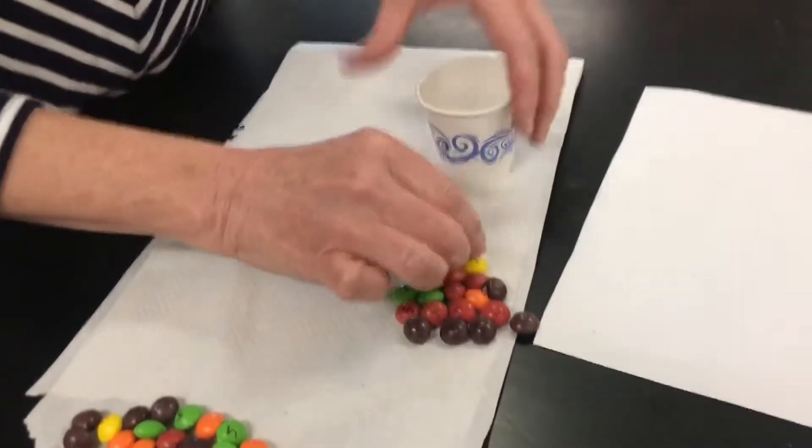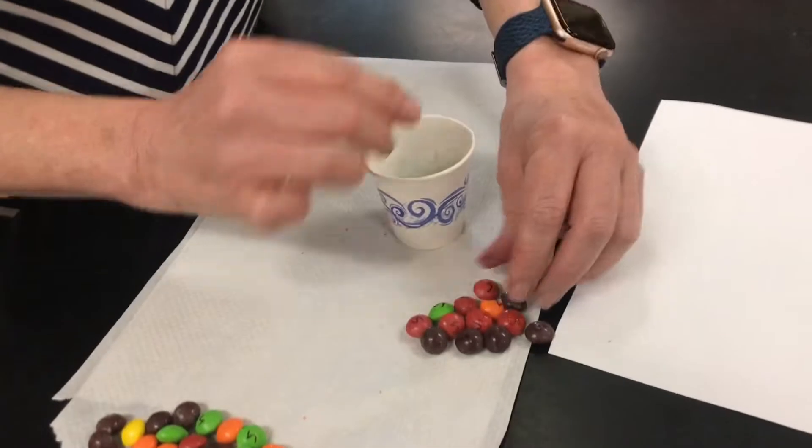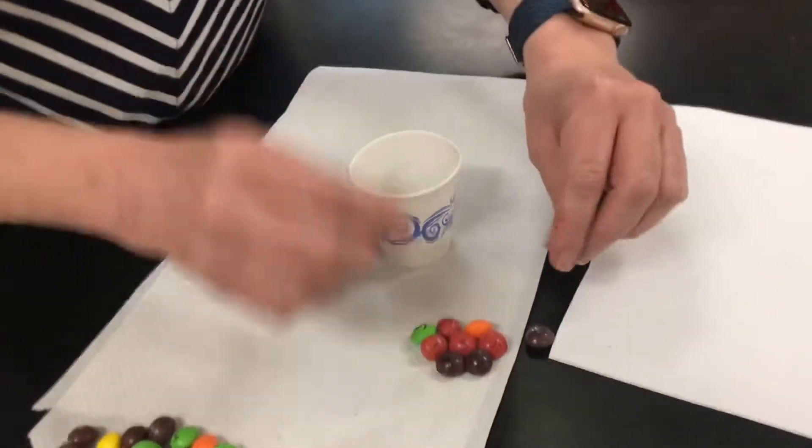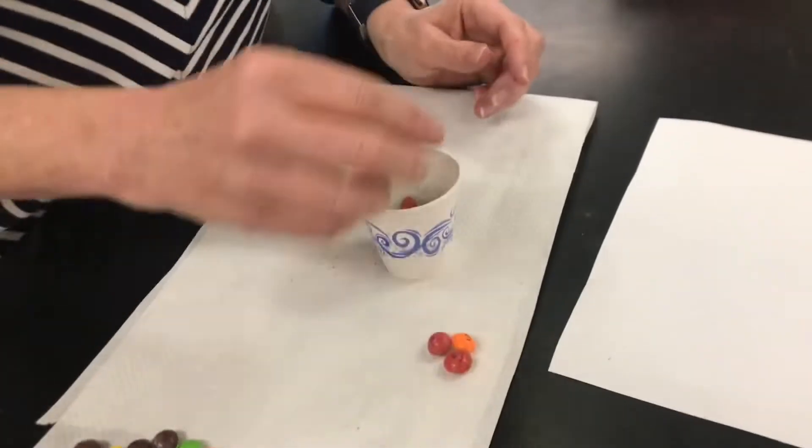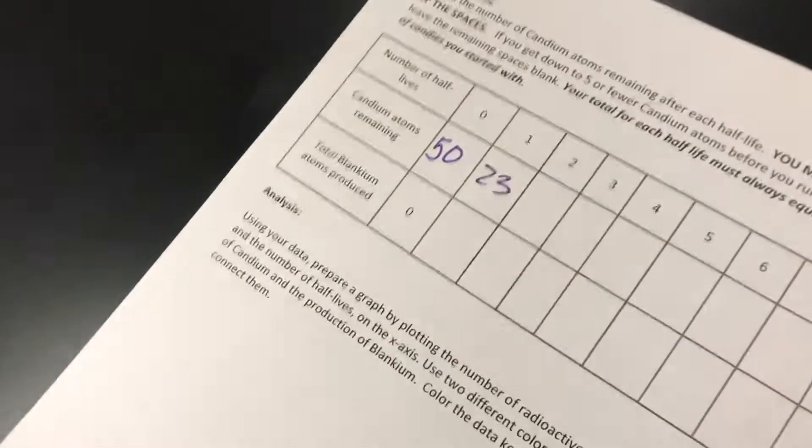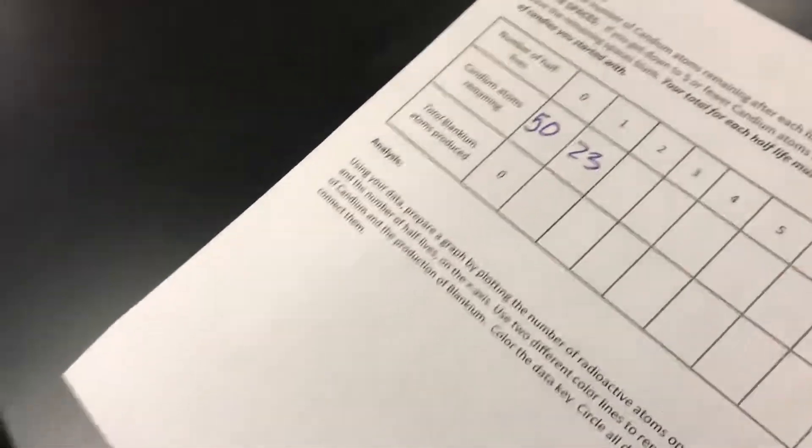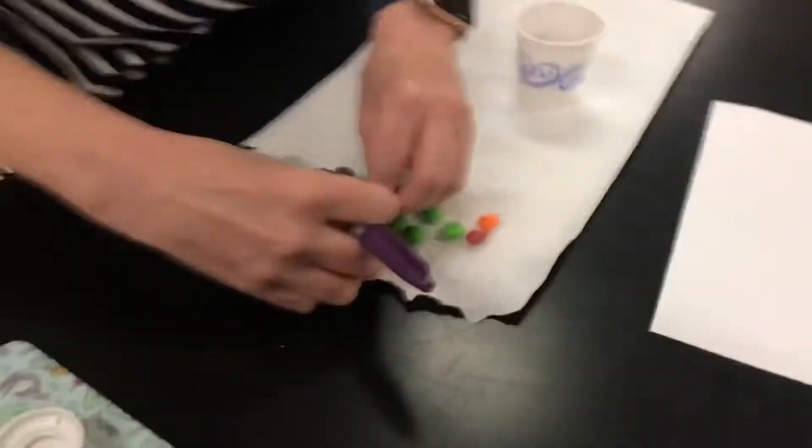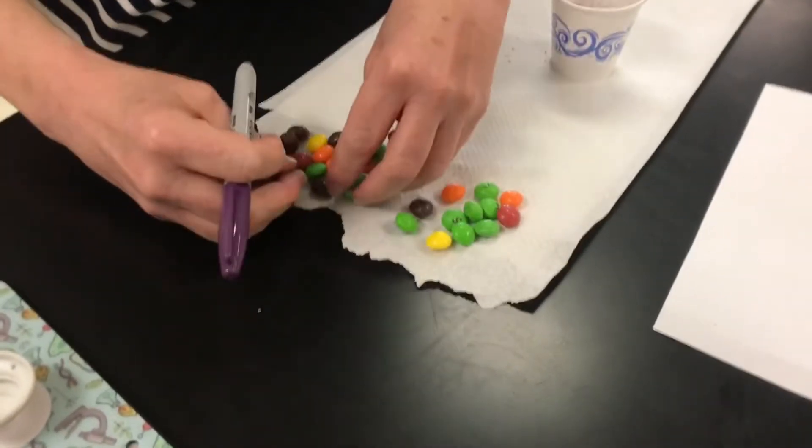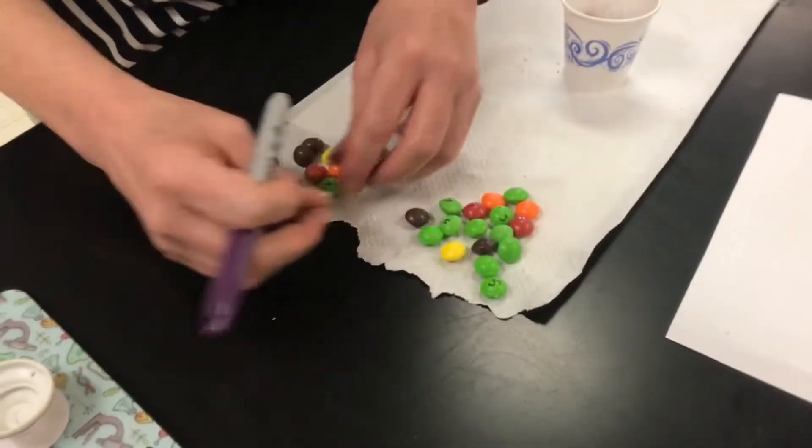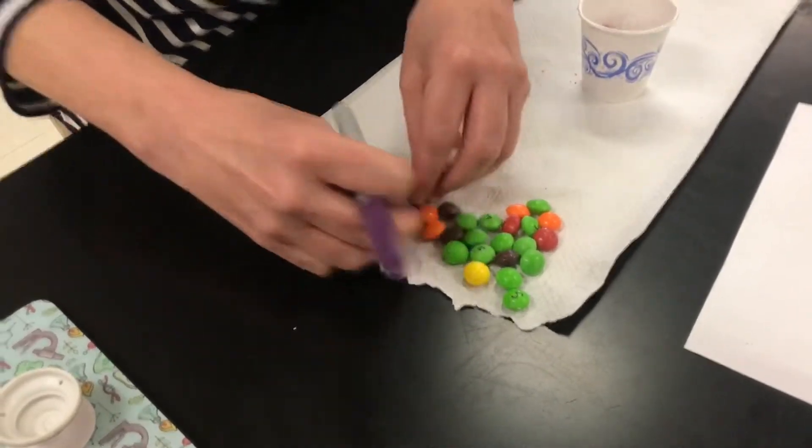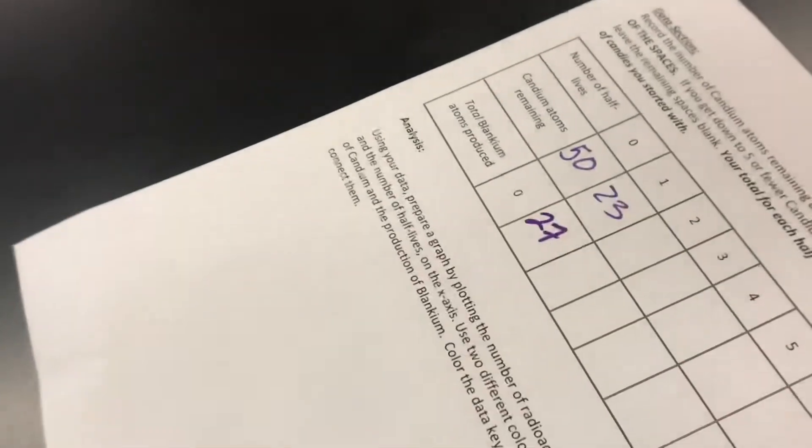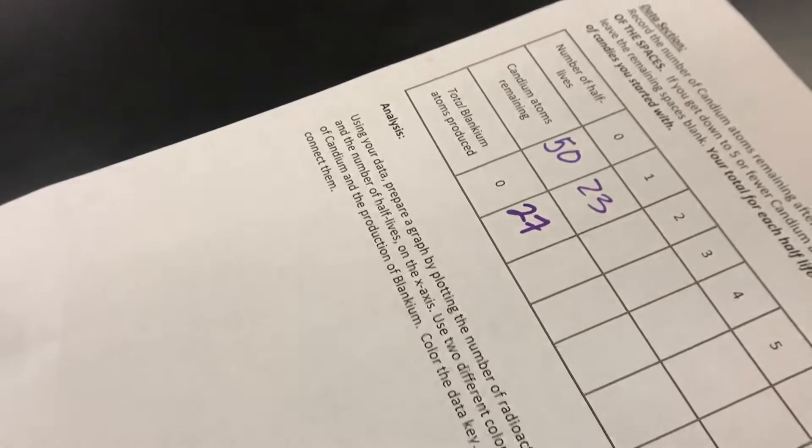So I've got 2, 4, 6, 8, 10, 12, 14, 16, 18, 20, 22, 23 radioactive left. And I have 3, 6, 9, 12, 15, 16, 17, 18, 20, 22, 24, 26, and 27 that have decayed. Alright, 27 plus 23 equals 50.